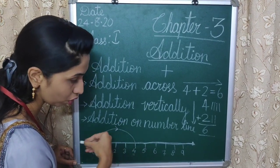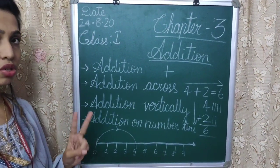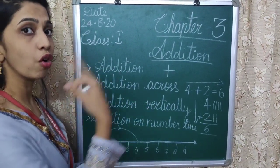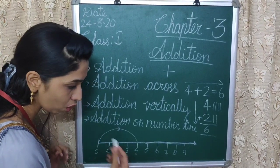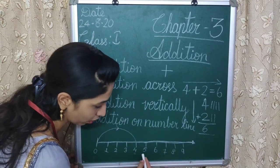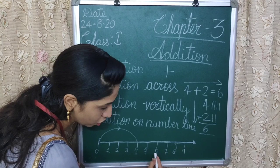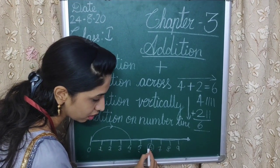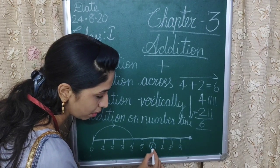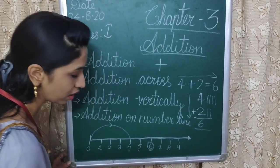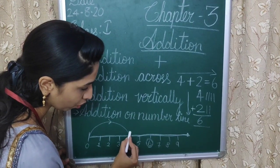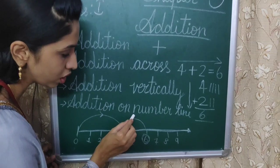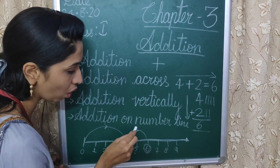The second number is 2, so count 2 places forward. Leave 4 and count: 1, 2. We get 6. Circle the sum or the answer. Then draw an arrow mark showing how we jump forward from 4 to 6.